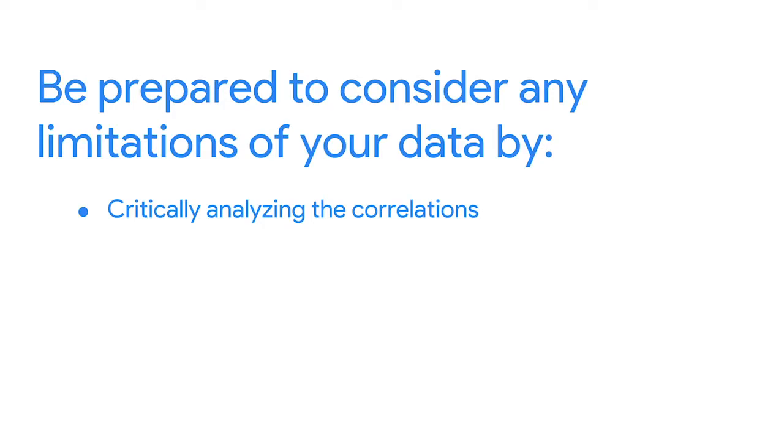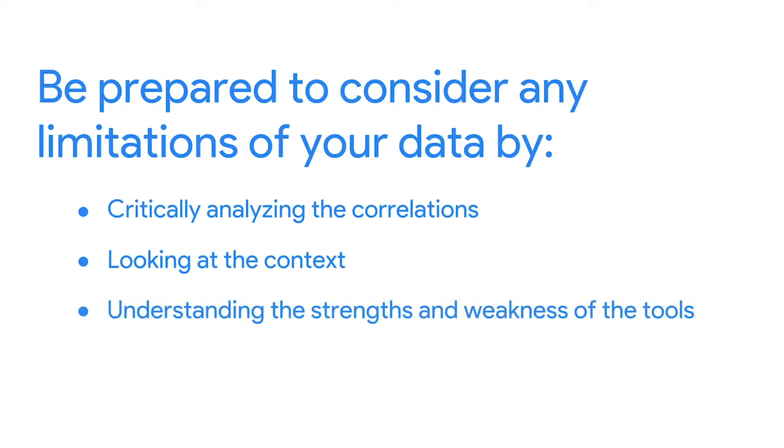Finally, be prepared to consider and describe to your stakeholders any limitations in your data. You can do this by critically analyzing the patterns you discovered for integrity — for example, could the correlations found be explained as coincidence? Use your understanding of the strengths and weaknesses of the tools you used to pinpoint any limitations they may have introduced. Remember to focus on stakeholder expectations and project goals, identify possible questions with your team, review your presentation with zero assumptions, and consider the limitations of your data.